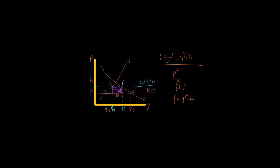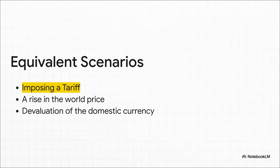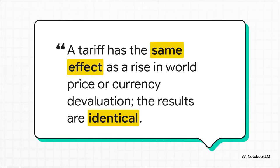The result, a higher price inside the country, is exactly the same thing that would happen if the world price for that good suddenly shot up, or if the country's currency lost value, making all imports more expensive. The market doesn't actually care why the price went up. And this really is the crucial takeaway here. The market just reacts to the new, higher price. It doesn't care about the reason behind it. So whether it's a government imposing a tariff, or a global supply chain problem, or a change in the currency exchange rate, the end result for producers and consumers is identical.